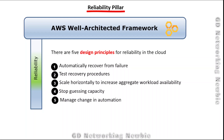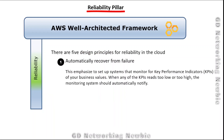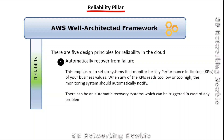Automatically recover from failure means we need to set up a system that monitors the KPIs of your business values. When any KPI reads too low or too high, the monitoring system should automatically notify so that the system can recover itself. There can also be an automatic recovery system triggered in case of any problem — the system should be able to detect when recovery procedures need to be initiated.